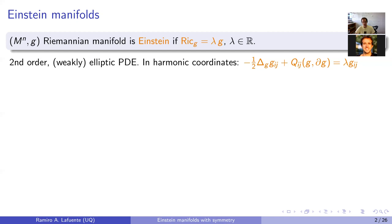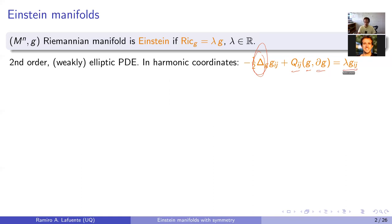It can be made elliptic by choosing suitable coordinates and breaking the gauge. For instance, in harmonic coordinates the metric entries g_ij satisfy a second-order PDE involving the Laplace-Beltrami operator, where q is a quadratic term depending on g_ij and their first derivatives. It turns out this is very involved and it's typically hard to construct examples, particularly in the compact world.